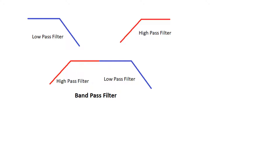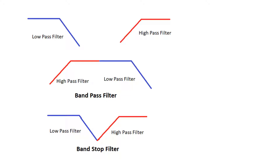If we do it the other way — placing the low-pass filter first and the high-pass filter after — it allows parts of the low-frequency and high-frequency signals to pass but attenuates in between. This is called a band-stop filter, or notch filter, because of its shape. With this concept established, let's move ahead.